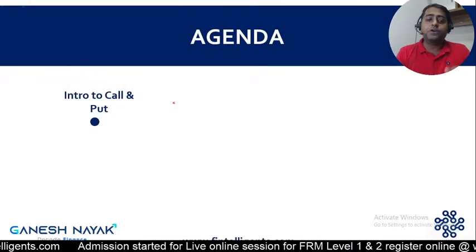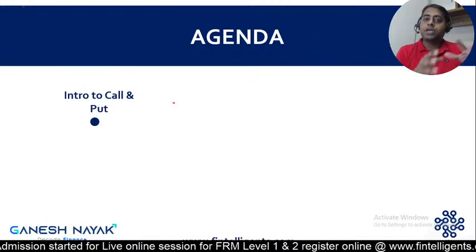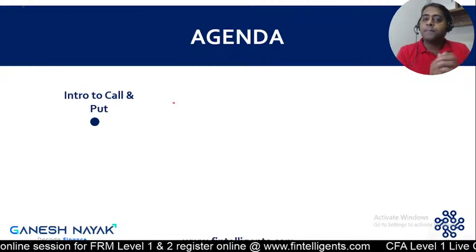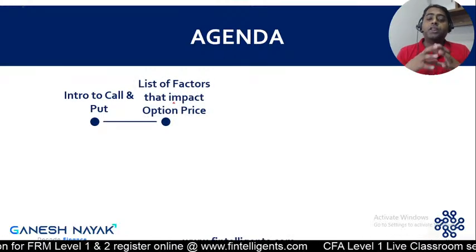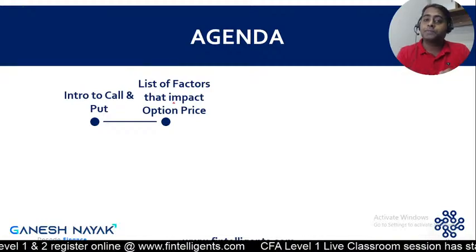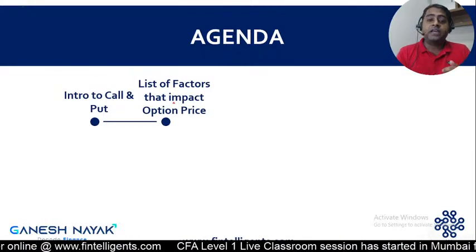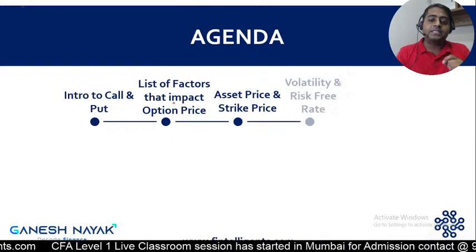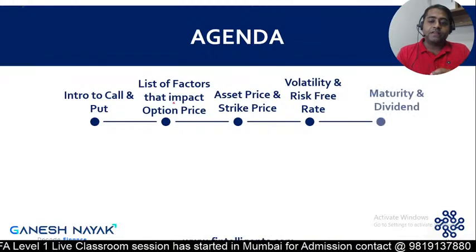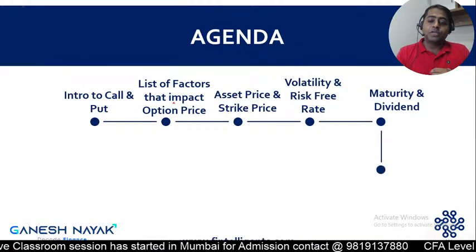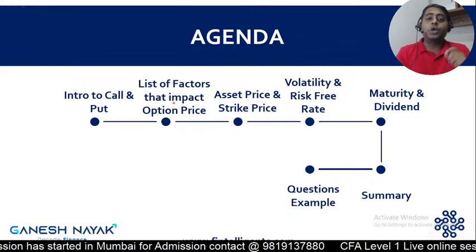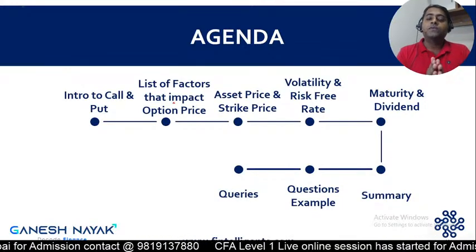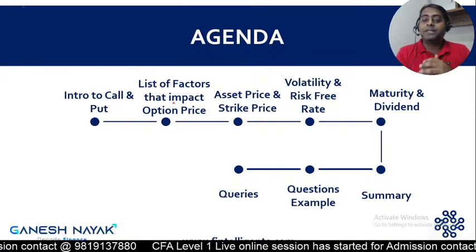Today's agenda: I'll give you a brief introduction about call and put options, then we'll look at the six factors that impact option price — underlying asset price, strike price, volatility, risk-free rate, maturity, and dividend. We'll deep dive into each factor, review a summary, and then go through a few exam-style questions to solidify the concept.